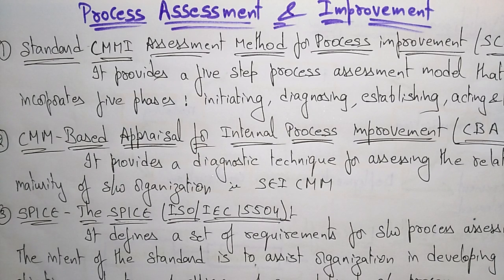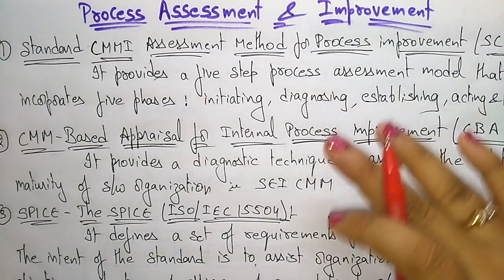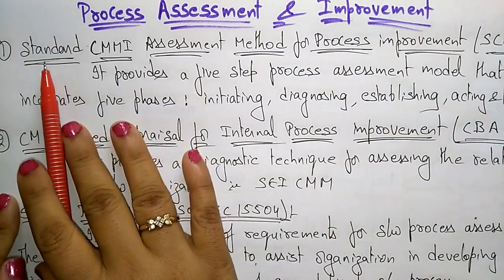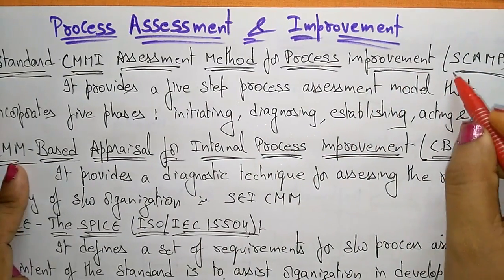Coming to the next topic: process assessment and improvement. Whatever processes an organization is going to perform, they can have some assessments and improvements. For those assessments and improvements, products will be allotted some standardization techniques. Let us see those assessments. The first one is SCAMPI — the Standard CMMI Assessment Method for Process Improvement.